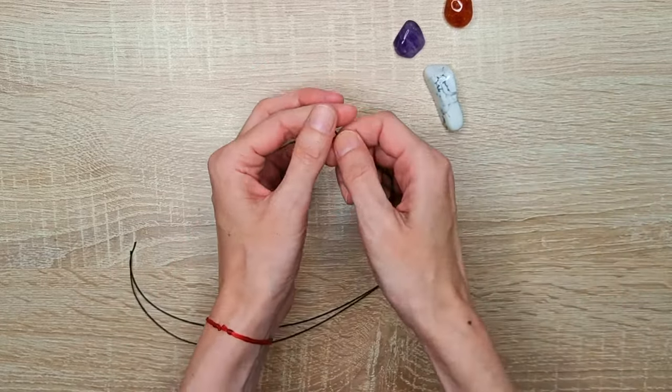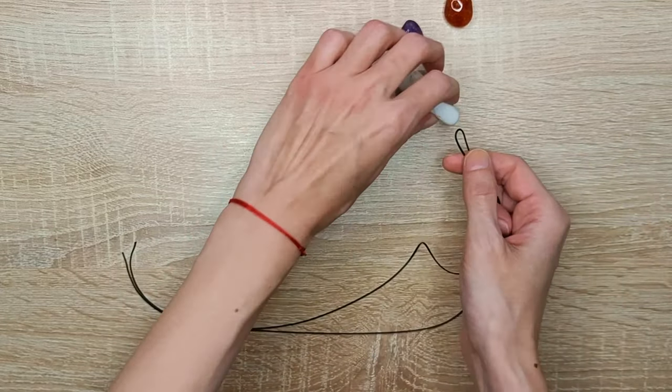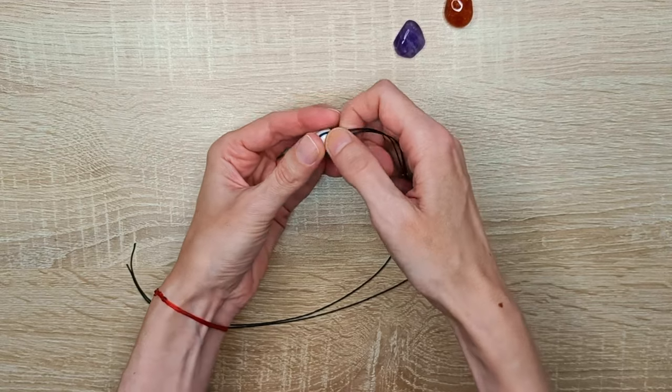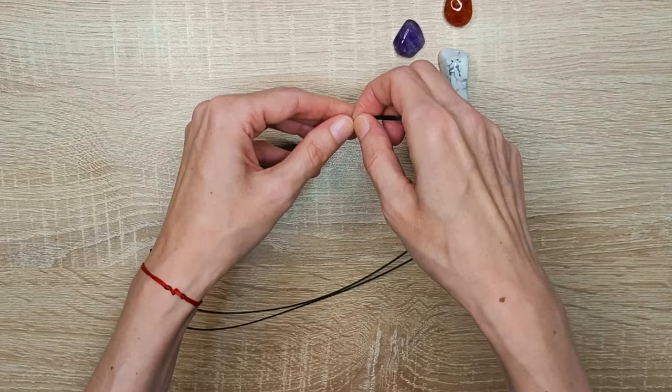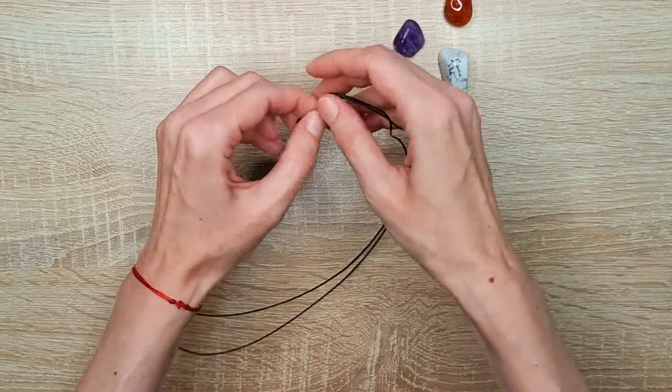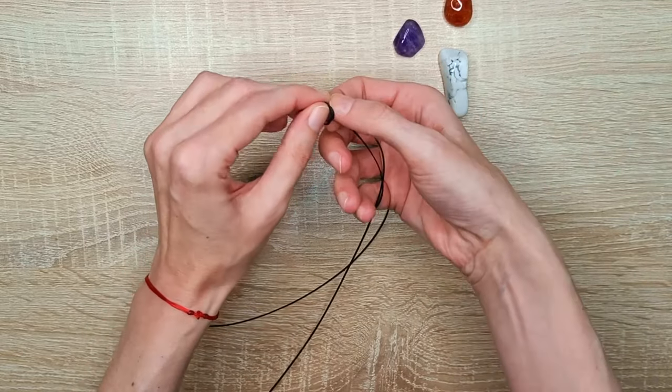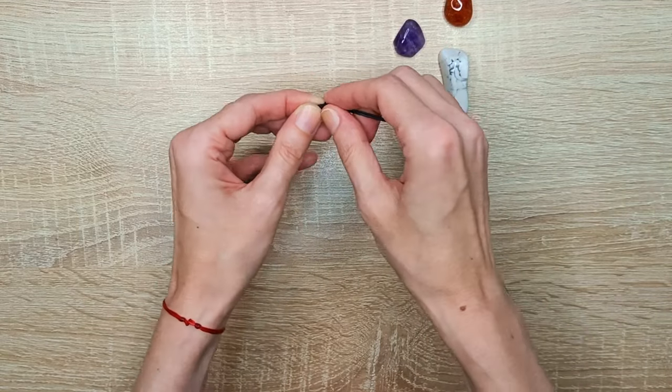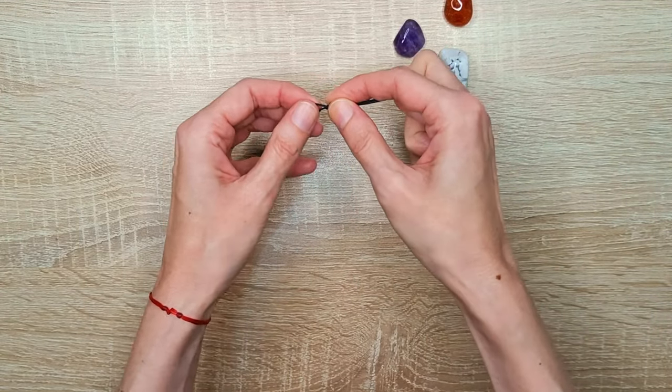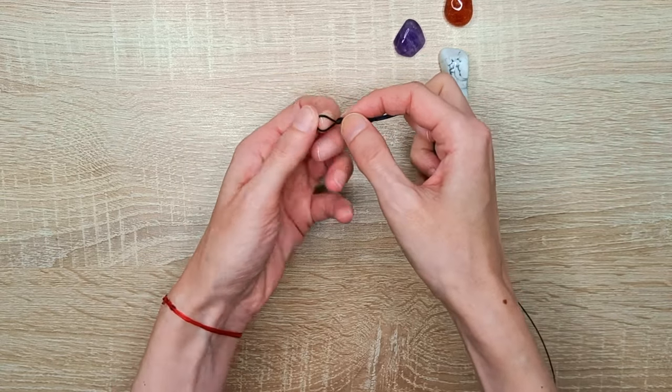Using an 80cm cord we will start wrapping our first crystal. For this tutorial I can't give you exact measurements, because the length of your string will depend on how many crystals you will use and how long you want your braids to be. If you want a step by step tutorial on how to wrap a crystal, I will have the link to my video in the description below.